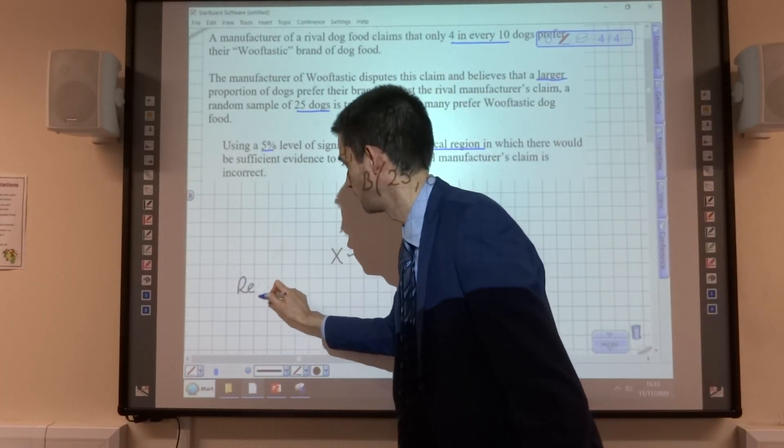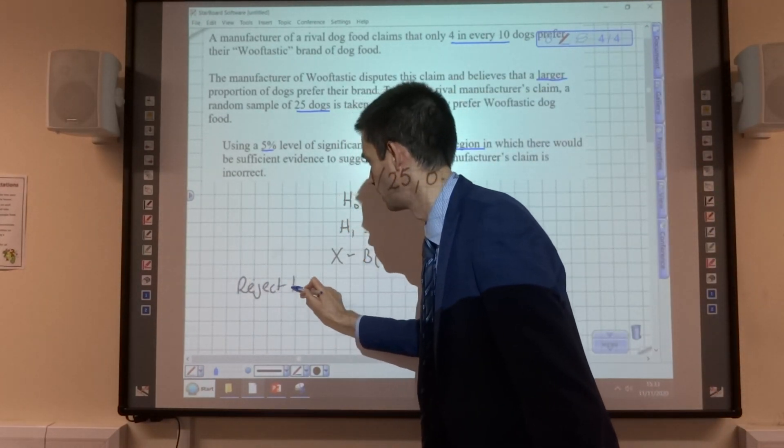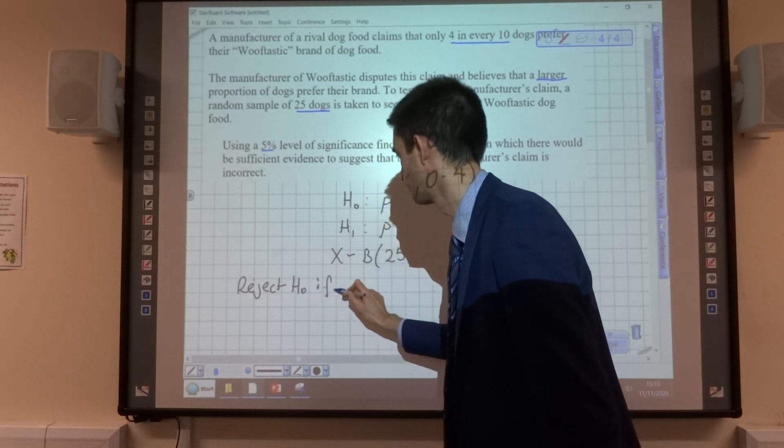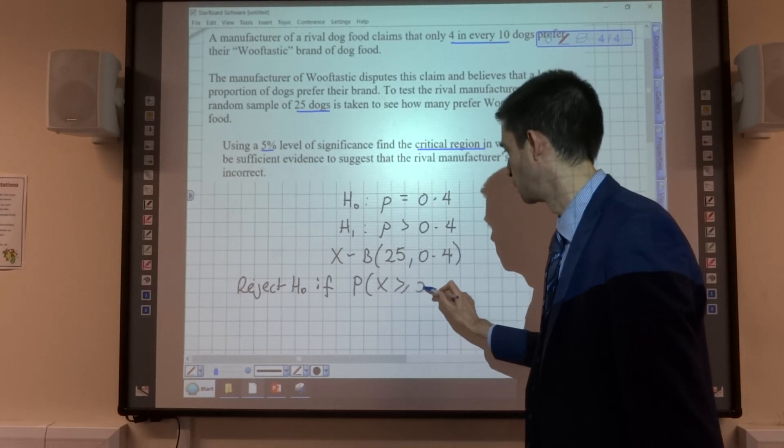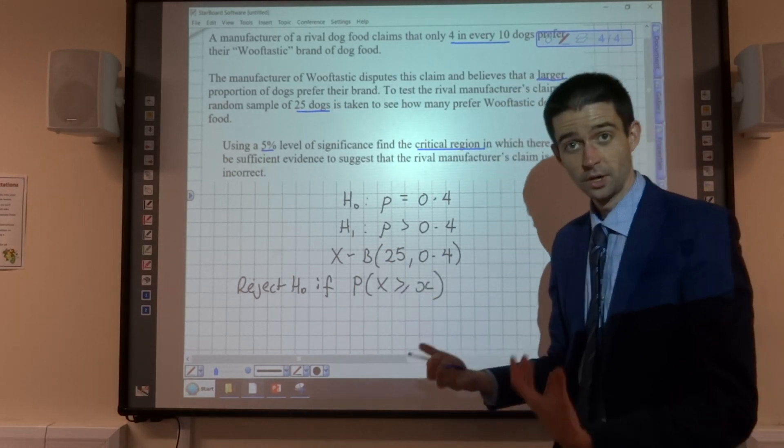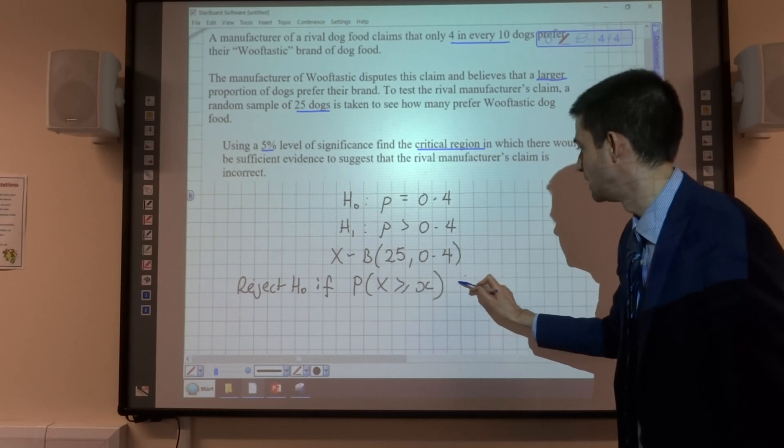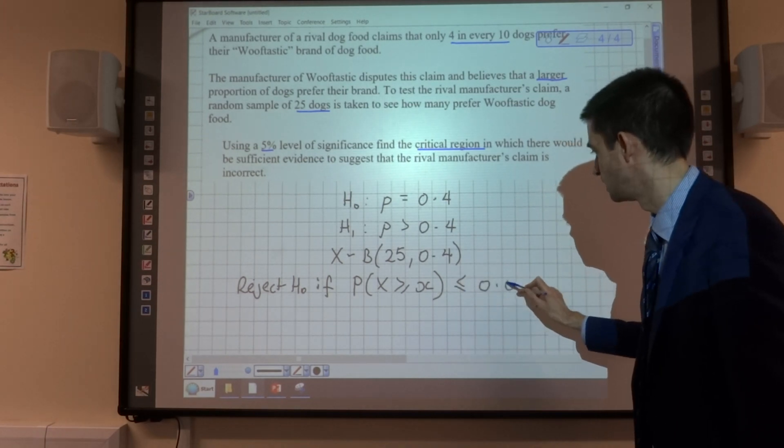So we would be saying that we would reject H0 if the probability of X being greater than or equal to a value of X that we're going to work out in a minute is less than or equal to 0.05.